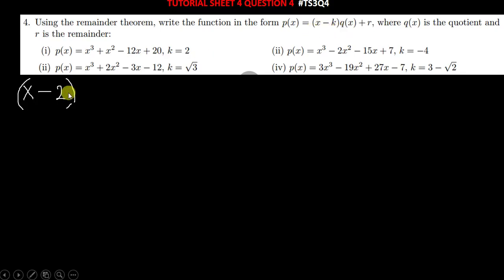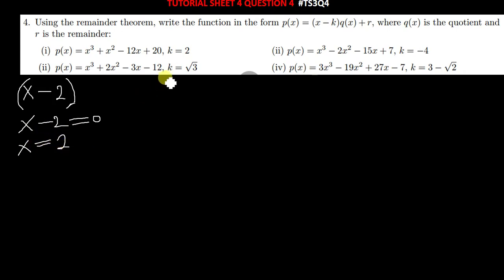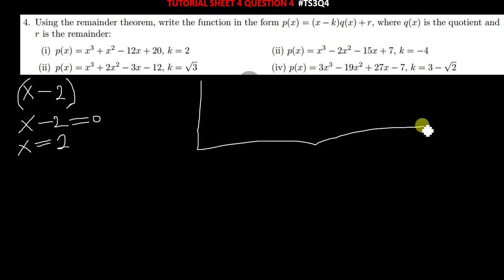So x minus 2 — this is the value of k, which is 2. When you are solving, simply equate this to 0, so x is just going to be equal to 2. What you can do now is use synthetic division or long division to divide in order to find the quotient.